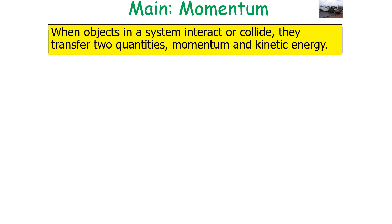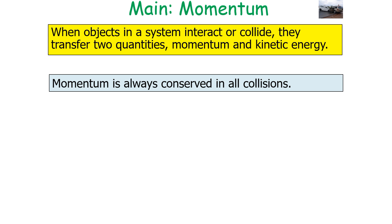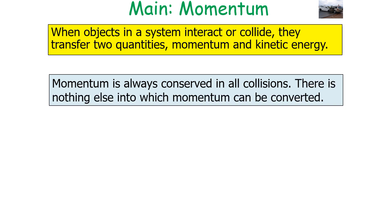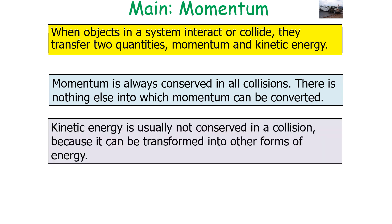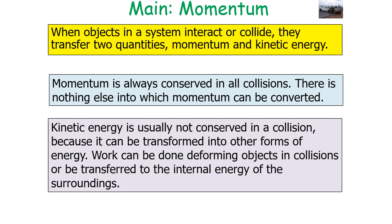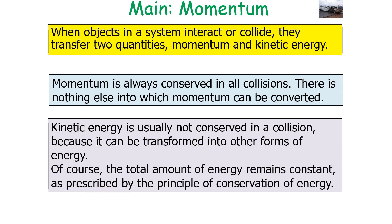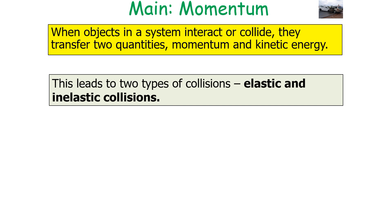When two objects in a system collide, they transfer two quantities: momentum and kinetic energy. Momentum is always conserved in all collisions because there is nothing else into which momentum can be converted. But kinetic energy is usually not conserved in a collision because it can be transformed into other forms of energy. Work can be done deforming objects or be transferred to the internal energy of the surroundings. The total amount of energy remains constant, but this leads to two types of collisions: elastic and inelastic.